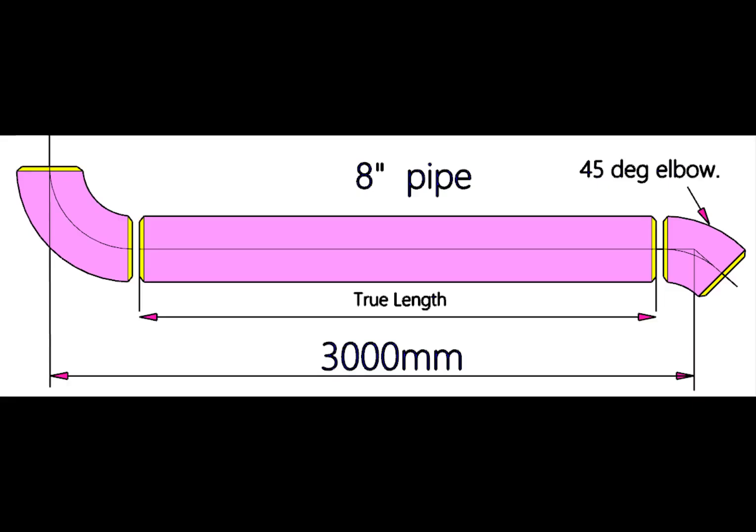Let us try another example. This piping have an 8 inch, 90 degree long radius elbow and 45 degree elbow.